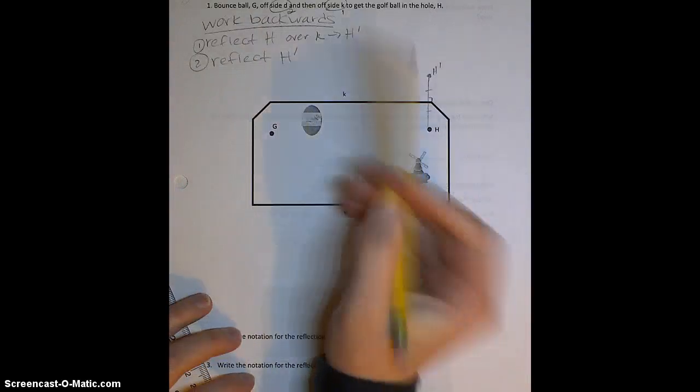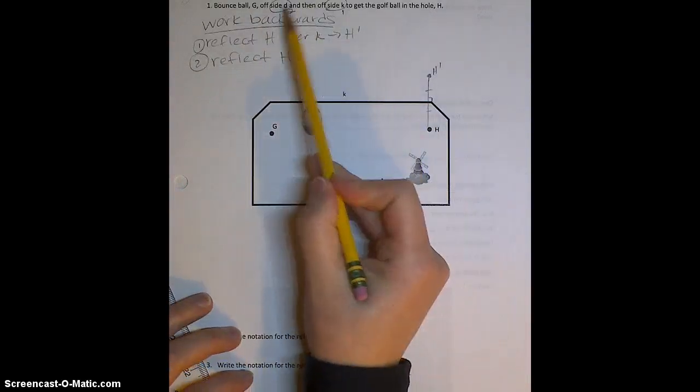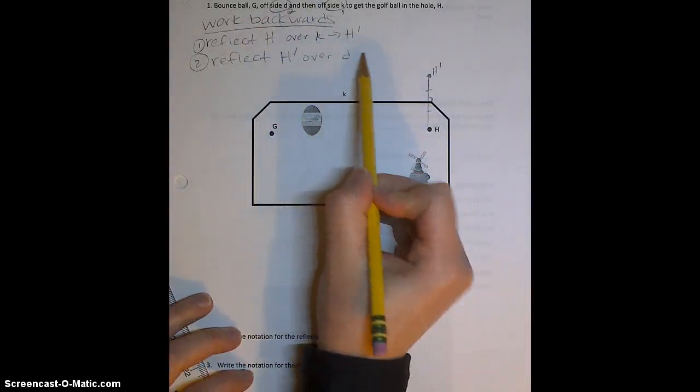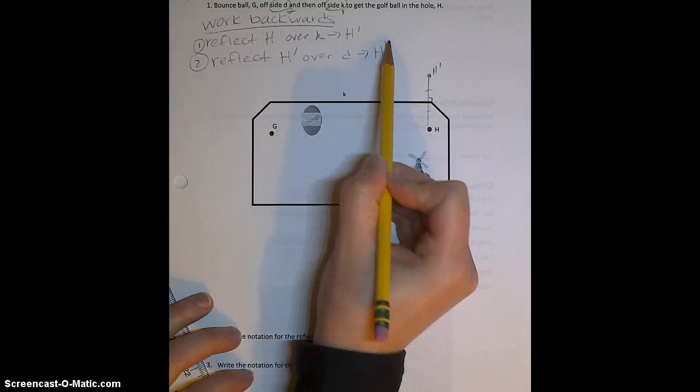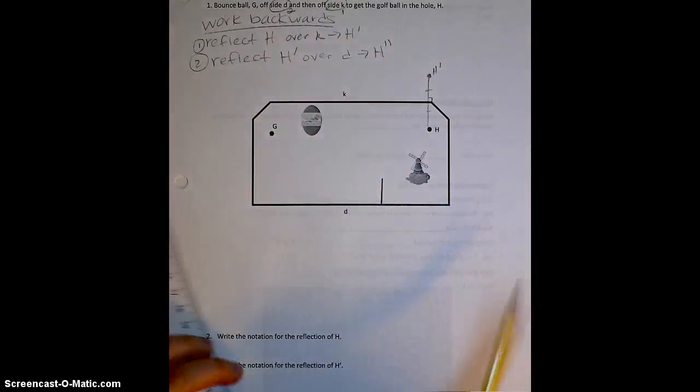So I'm going to reflect H prime over the next wall, which is D. And when I reflect a prime, I'm going to get a double prime.